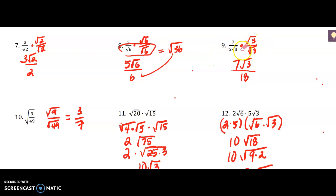Number 9: again, rationalizing the denominator by multiplying by the square root of 3 on top and bottom. So 7 times the square root of 3 is 7 square roots of 3. Down here, the square root of 3 times the square root of 3 is the square root of 9, which is 3, and then you have to do 3 times 2 which is 6 — so it's 7 square roots of 3 over 18. I just noticed my mistake there; I'm going to fix that — this should be a 6. Good thing I'm going back over this. And again, that can't simplify.